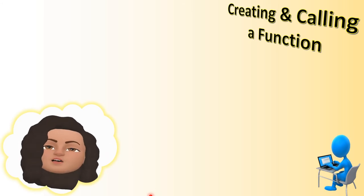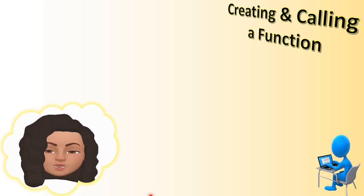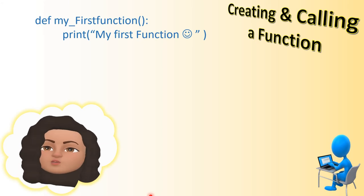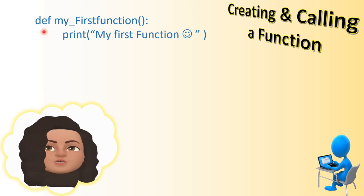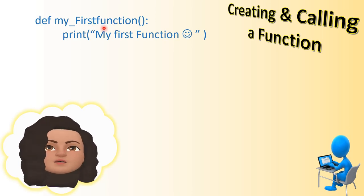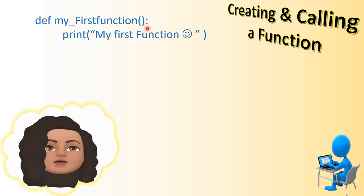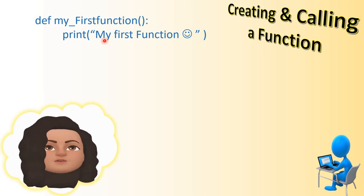Let's try to create a function. To define a function, we need the name of the function, parameters if required, and the body of the function. The function definition starts with the keyword 'def' followed by the name of the function - here the name is 'my_first_function'. Within parentheses I didn't give any parameters because they are optional. After the colon, the next statement is with indentation - that means this statement is the body of the function, which is a print statement printing 'my first function'.